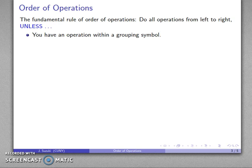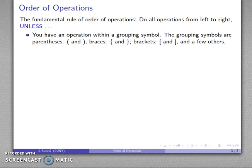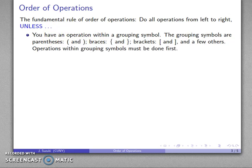The first important exception is you have an operation within a grouping symbol. These grouping symbols are things like parentheses, braces, brackets, and there's a couple of other grouping symbols that we'll introduce along the way. If you see any of these things—braces, parentheses, brackets—they give you an unless. Things within those grouping symbols should be done first. They have, to use our driving analogy, the right-of-way.